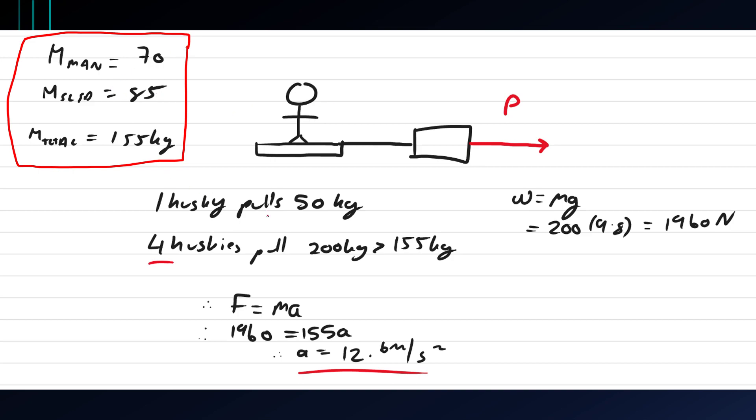Our total mass when we get onto F equals ma is actually 155 kilograms because that is the total mass of the man and the sled.